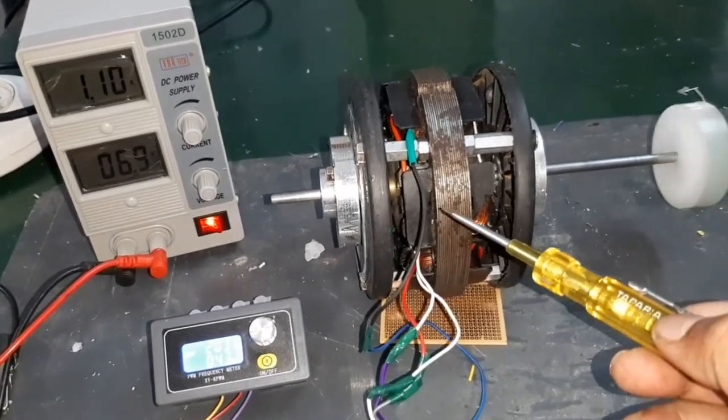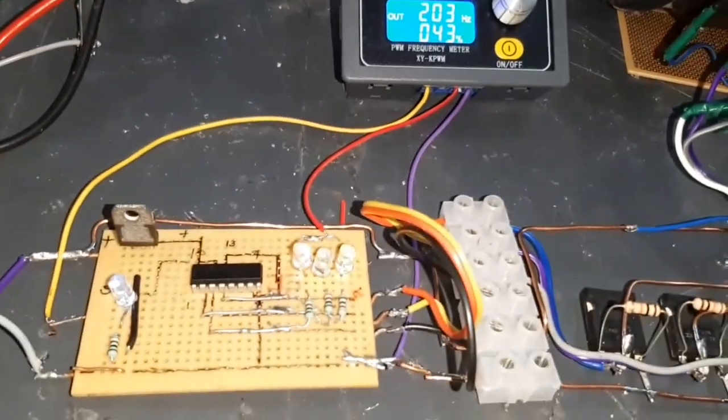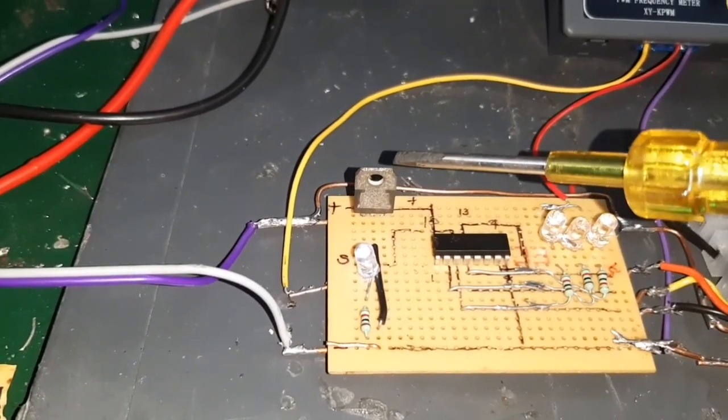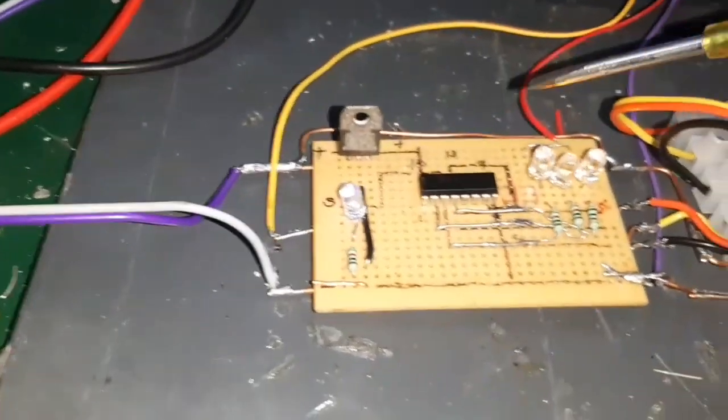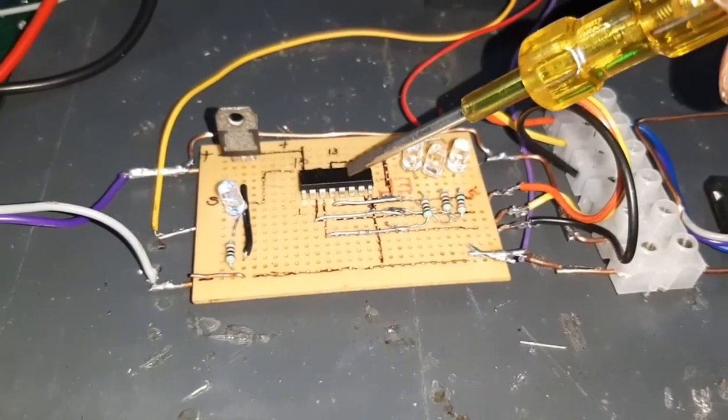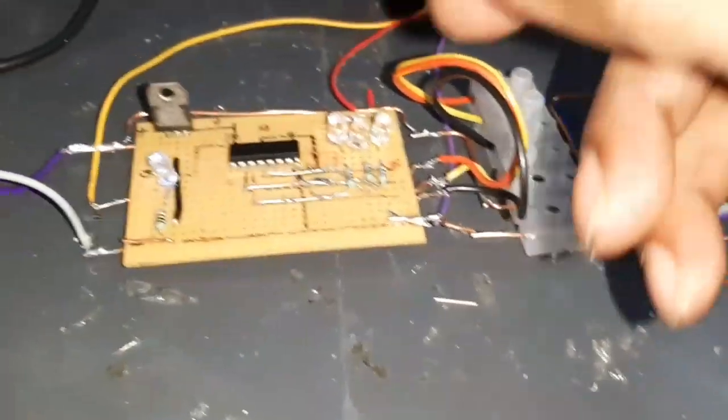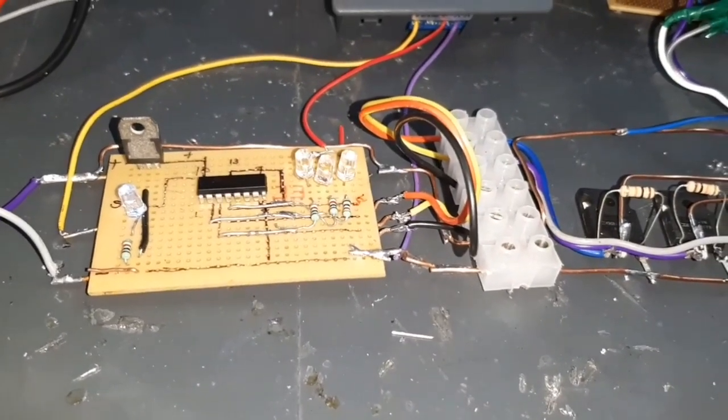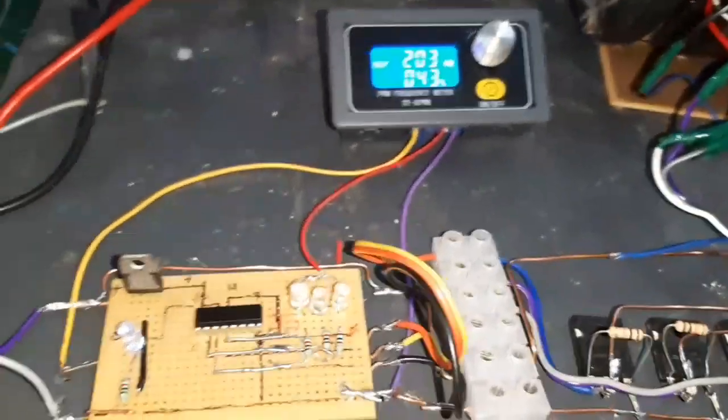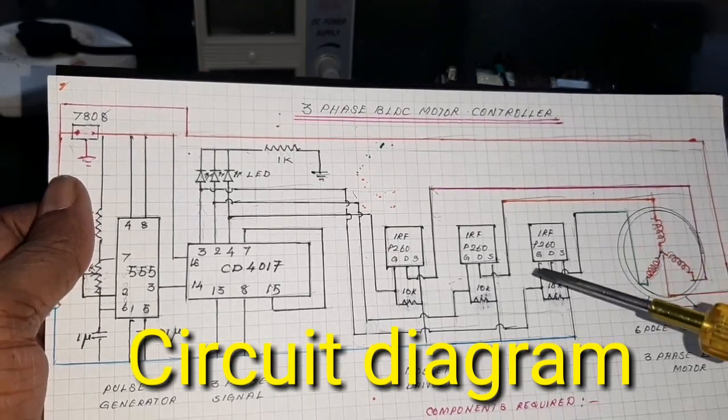And the output is given to the BLDC motor. The BLDC motor is 6-pole stator and 8-pole rotor. Now I am going to explain the circuit. The 7808 regulator is used to feed the supply for the signal generator and also the three-phase converter, that means 4017 IC, and the supply is directly given to the star point. Here, look at the three-phase BLDC motor controller.